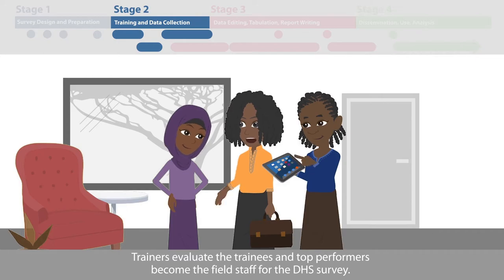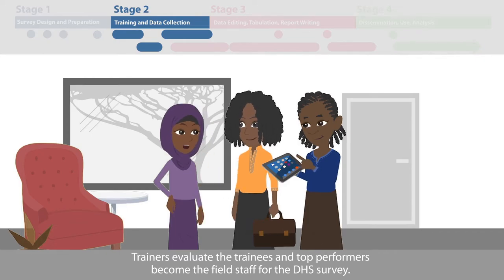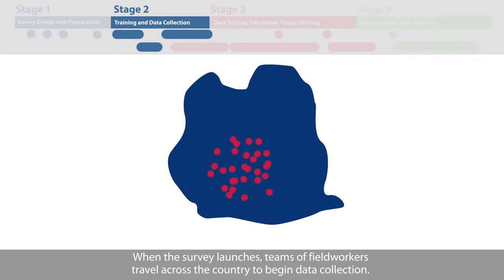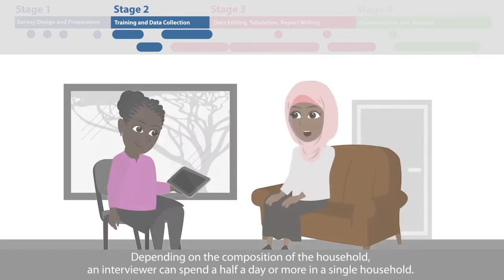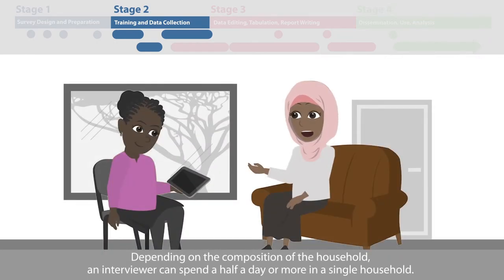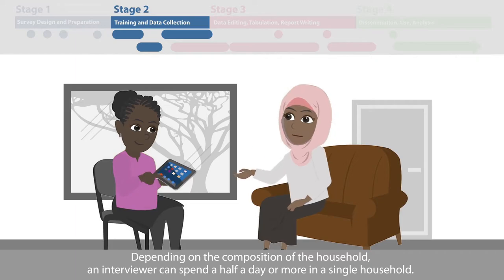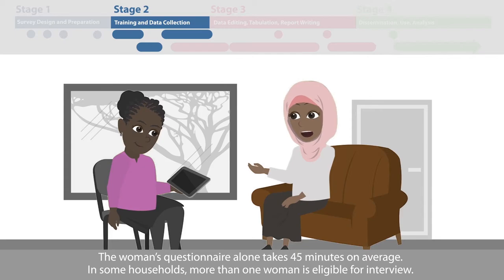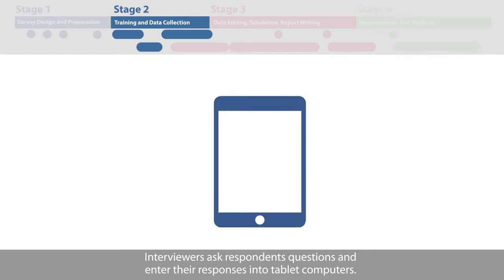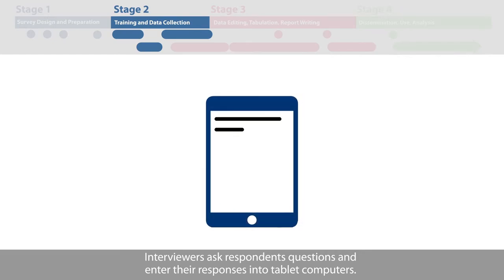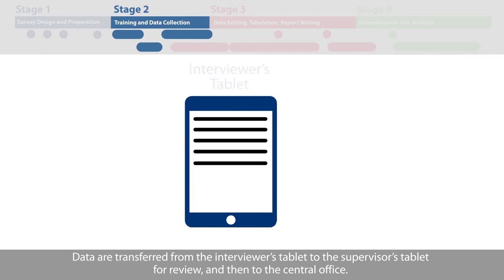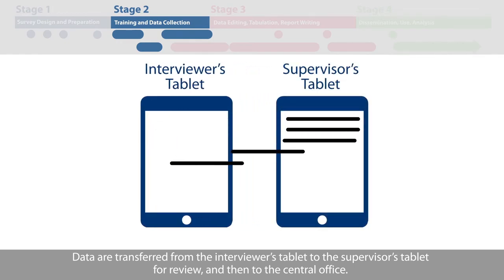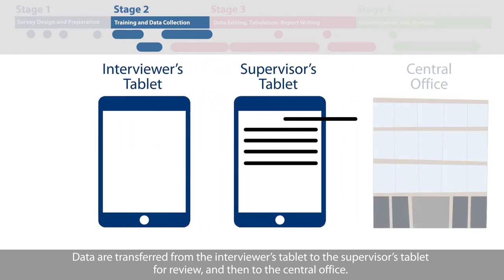Trainers evaluate the trainees, and top performers become the field staff for the DHS survey. When the survey launches, teams of field workers travel across the country to begin data collection. Depending on the composition of the household, an interviewer can spend a half a day or more in a single household. The woman's questionnaire alone takes 45 minutes on average. Interviewers ask respondents questions and enter their responses into tablet computers. Data are transferred from the interviewer's tablet to the supervisor's tablet for review, and then to the central office.